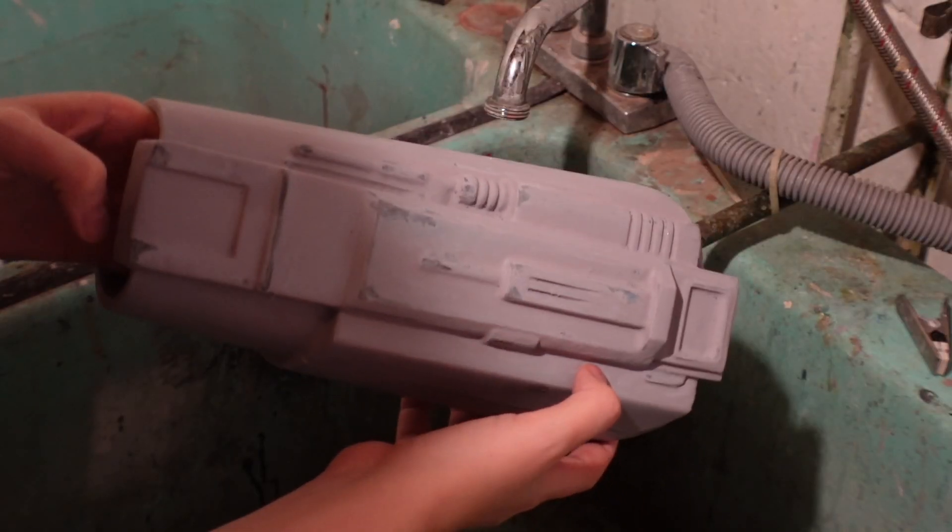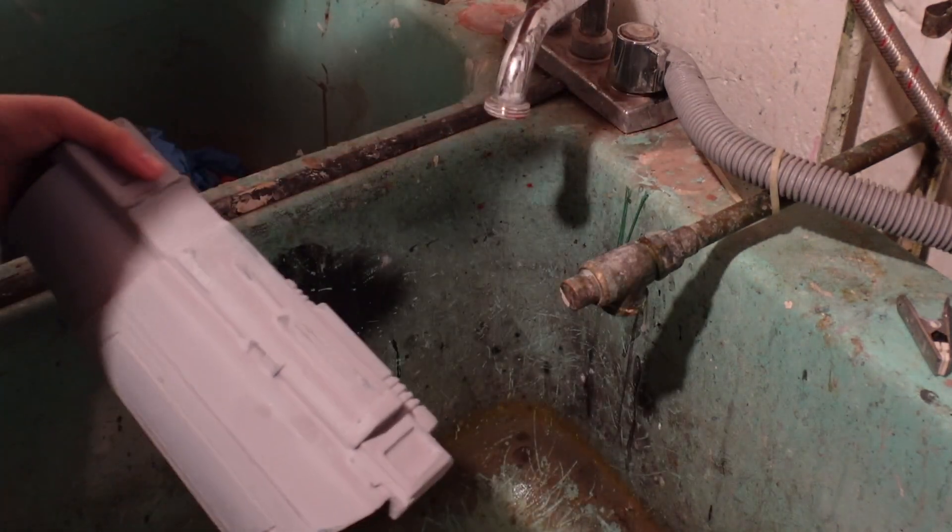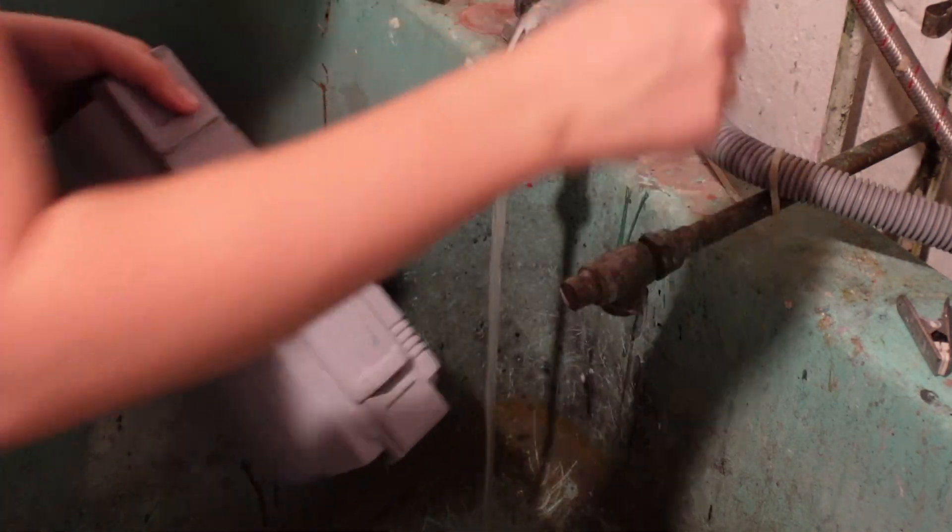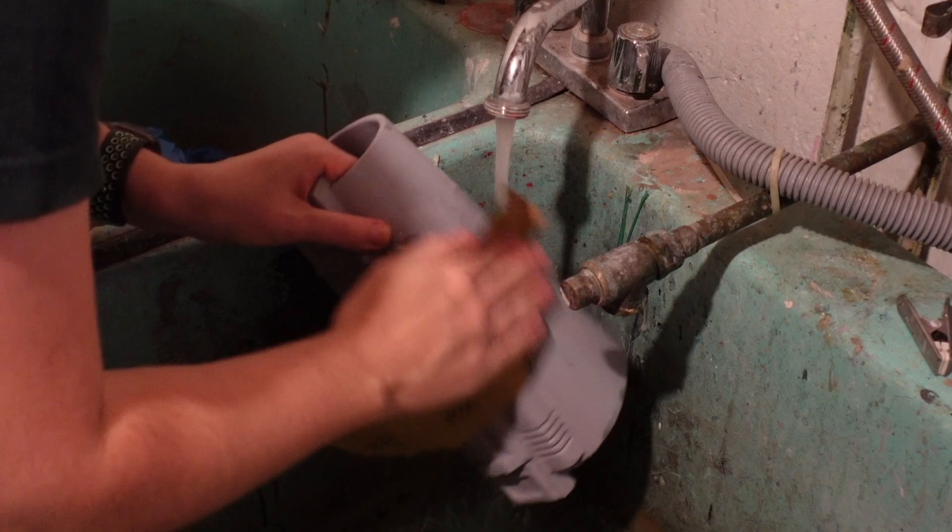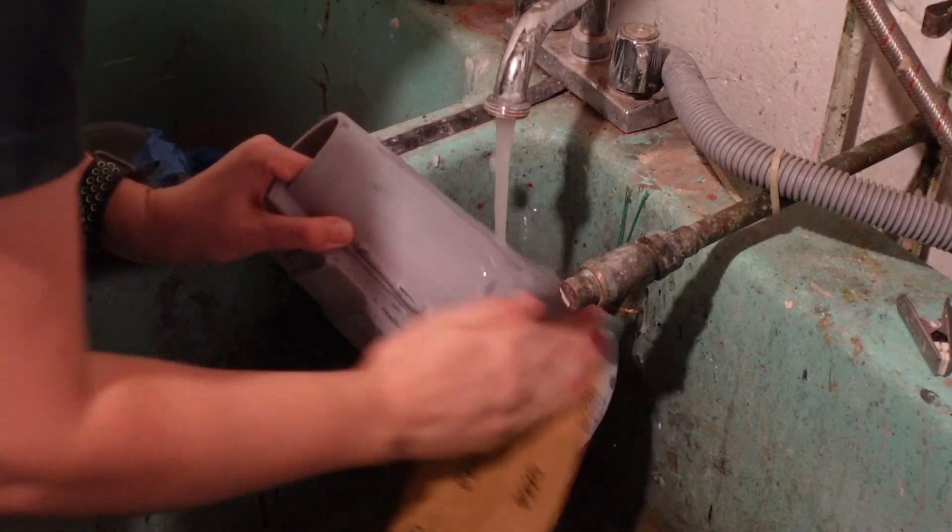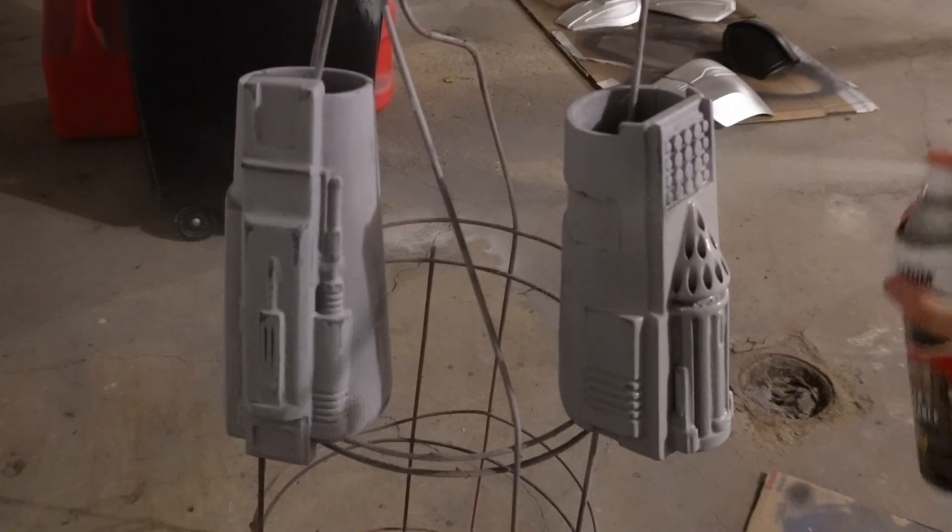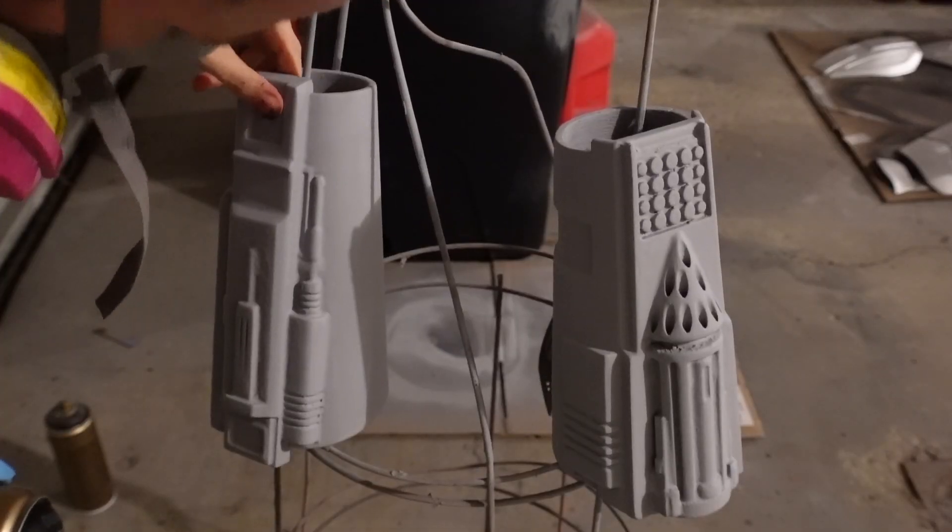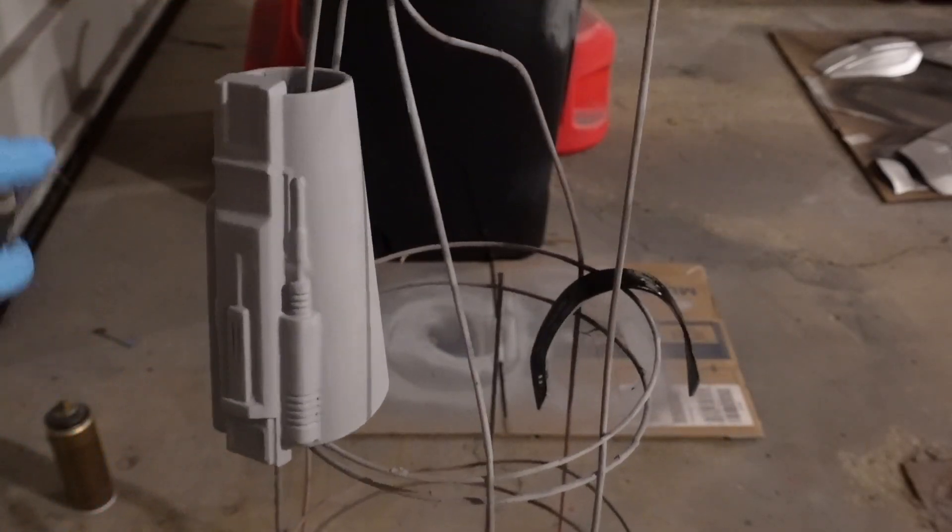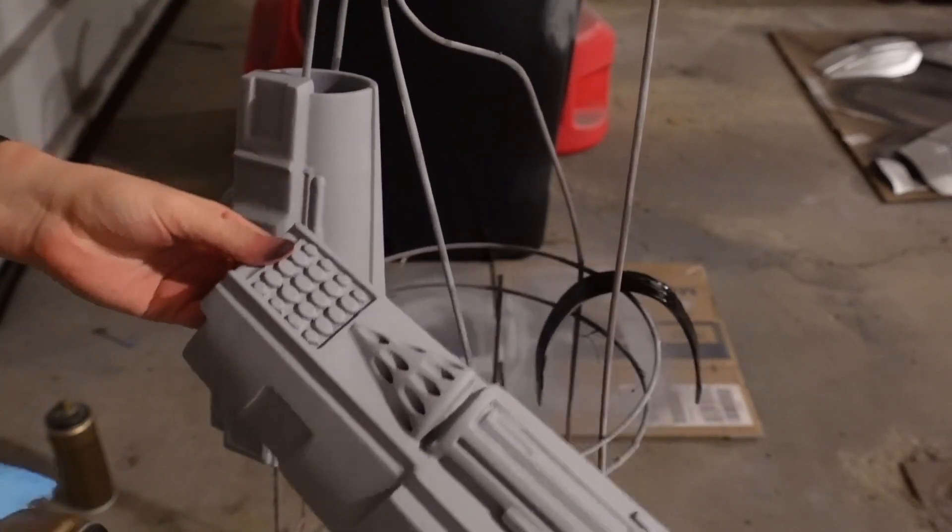I wasn't getting as clean of a finish as I liked with just the mouse sander alone so I ended up taking both of the gauntlets inside and did a little bit of wet sanding with some 220 grit wet sanding sheets. Once I'd wet sanded everything I then towel dried them both off and let them air dry overnight. I then gave them another coat of two-in-one filler primer that next morning. After letting that layer cure for around an hour I was finally happy with the finish enough to get started with painting.